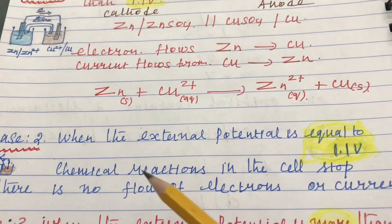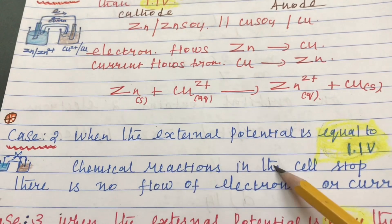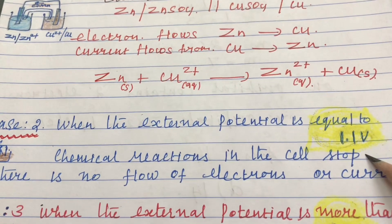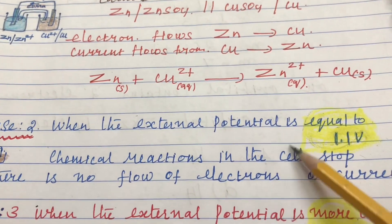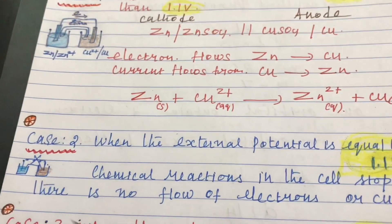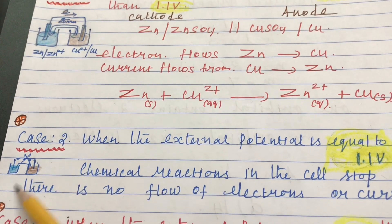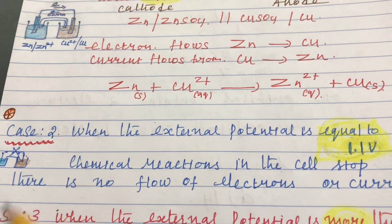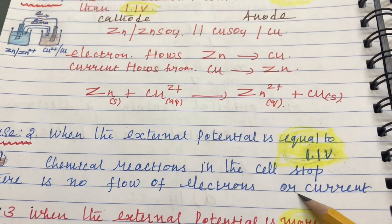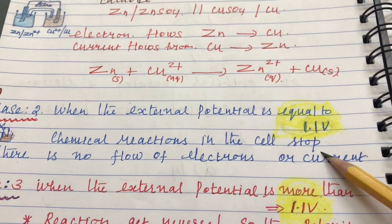The second case: when external potential is equal to 1.1 volt. The applied potential equal to 1.1 volt means there will not be any chemical reaction between two half cells, there will not be any flow of electron, there is no electric current.